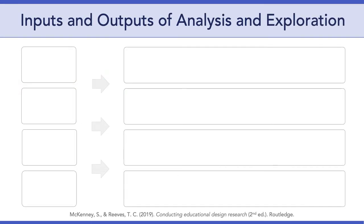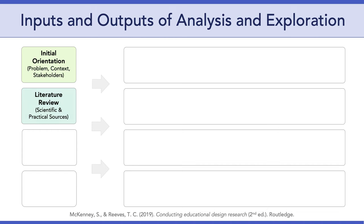Now I want to talk about the inputs and outputs of the analysis and exploration phase. The first input is the initial orientation — you've already done this — where we thought about the problem, the context, and the stakeholders. The second input is the literature review, which some of you have already started. The literature review is designed to accomplish three things: to develop a broader understanding of the problem, to provide ideas which can help shape data collection, and to assist in identifying frameworks for data analysis.